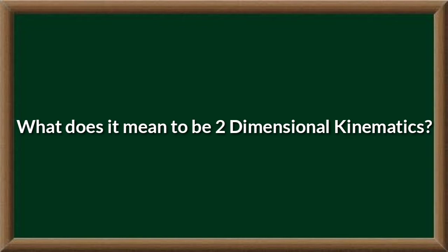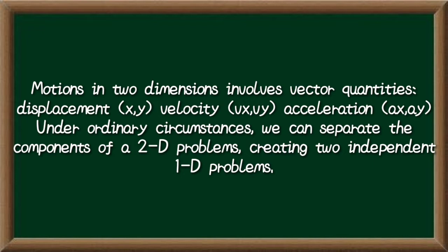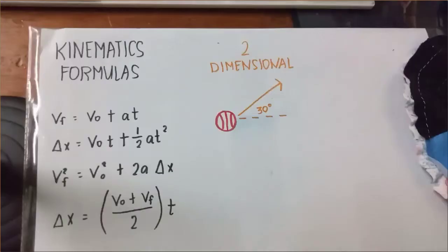And what does it mean to be two-dimensional kinematics? Motion in two dimensions involves vector quantities: displacement, velocity, and acceleration. Under ordinary circumstances, we can separate the components of a two-dimensional problem, creating two independent one-dimensional problems.